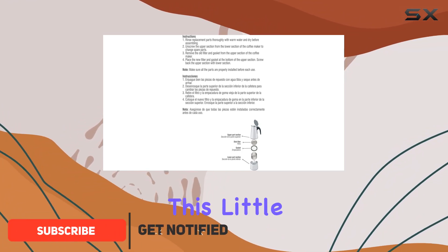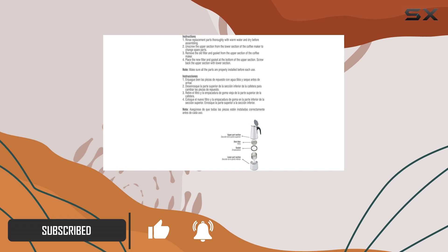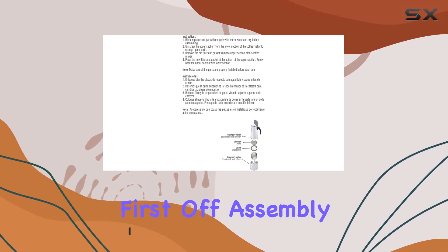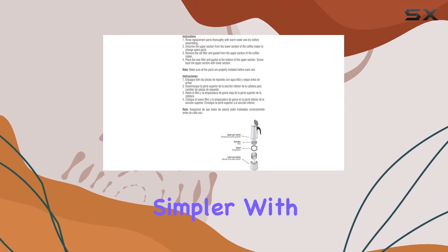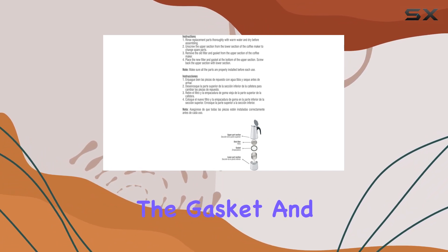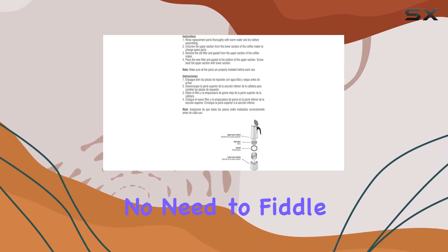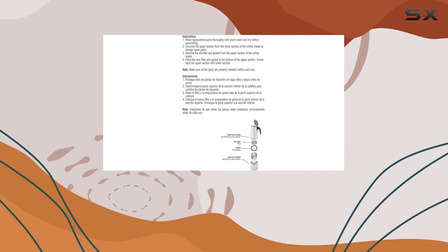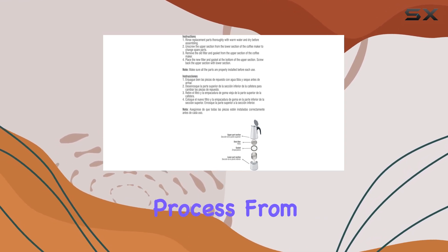Let's talk about why this little kit is an absolute game-changer for your coffee brewing experience. First off, assembly couldn't be simpler. With just two pieces, the gasket and filter, you're ready to roll. No need to fiddle around with complicated setups. It's a straightforward process from start to finish.